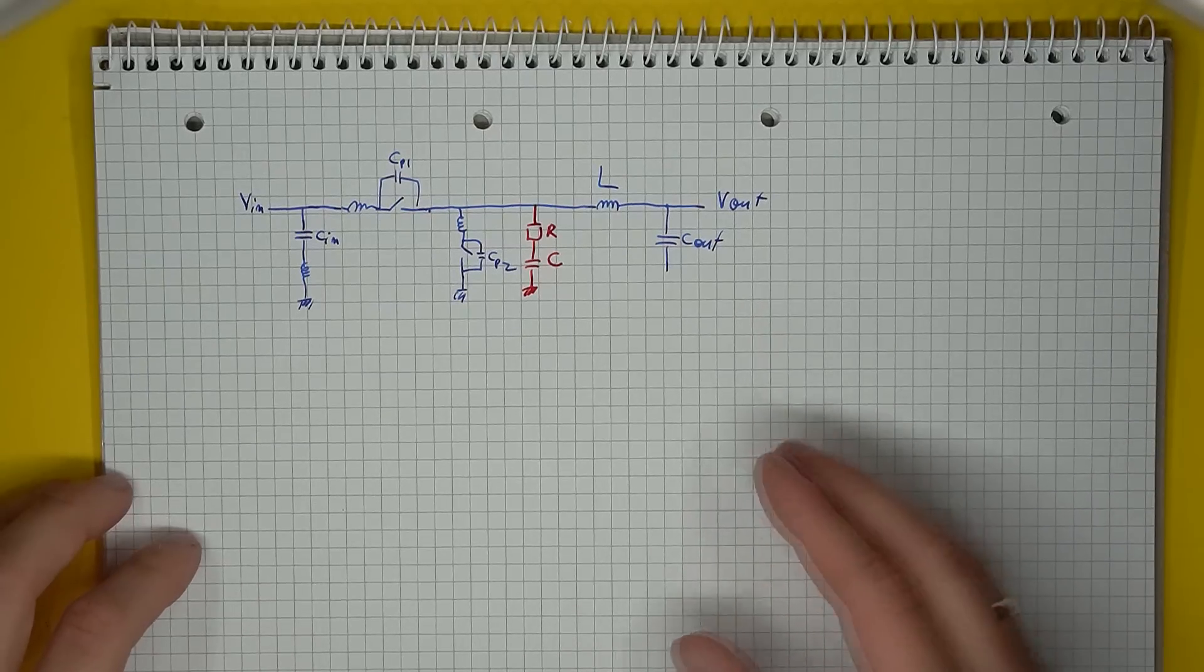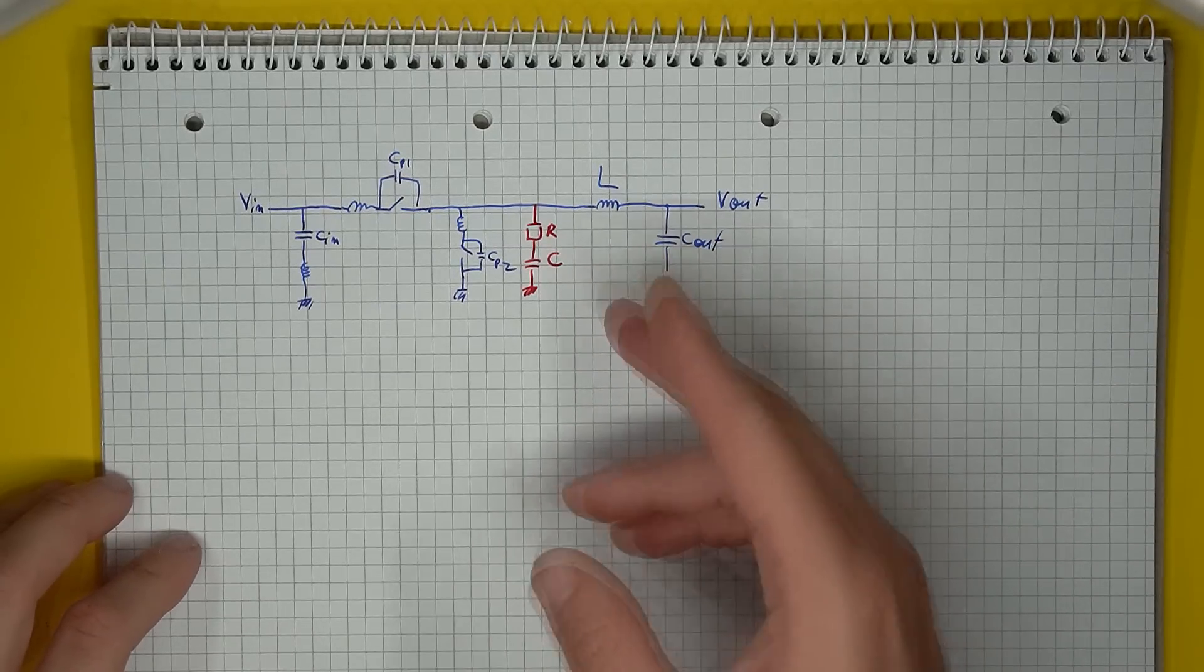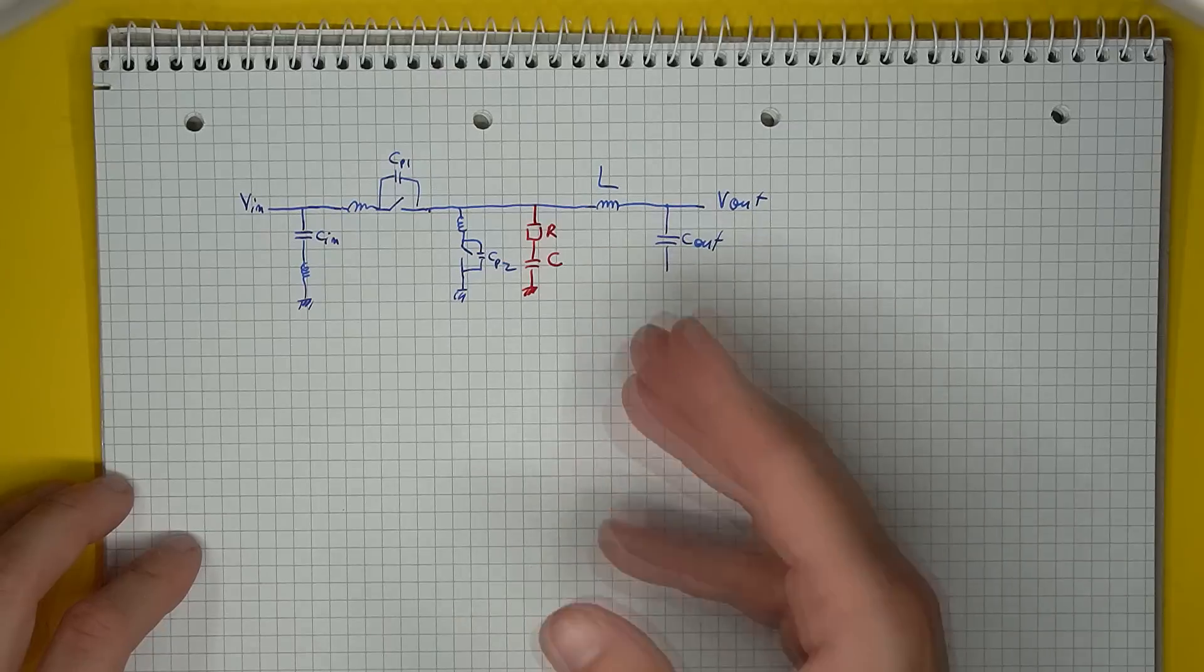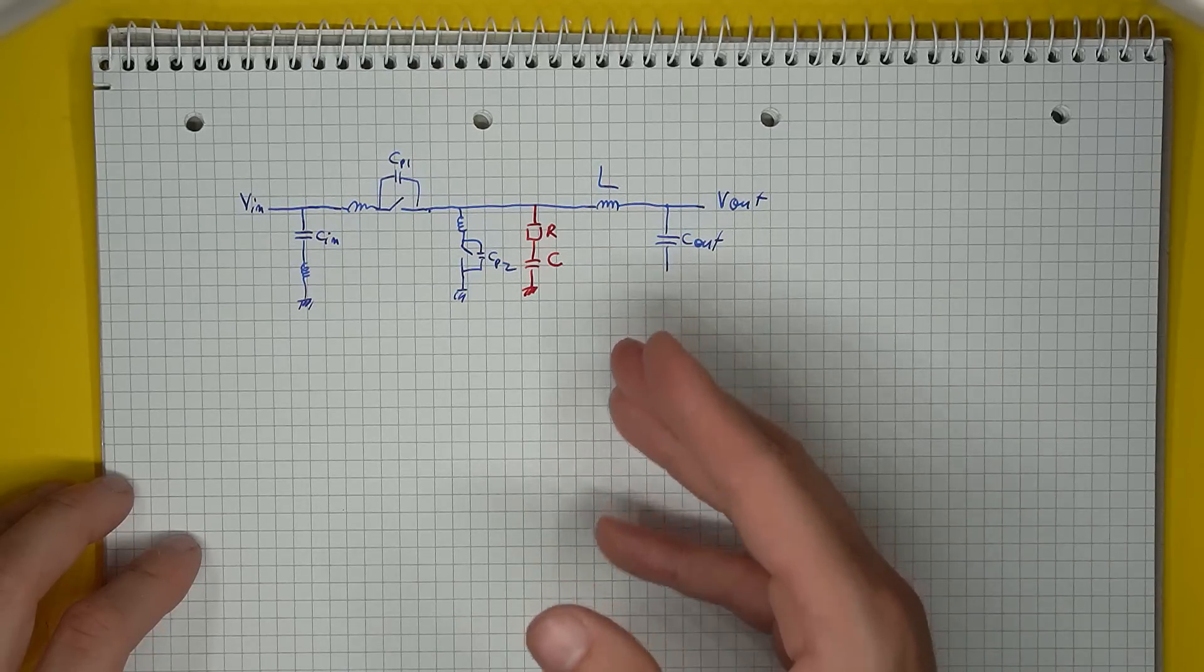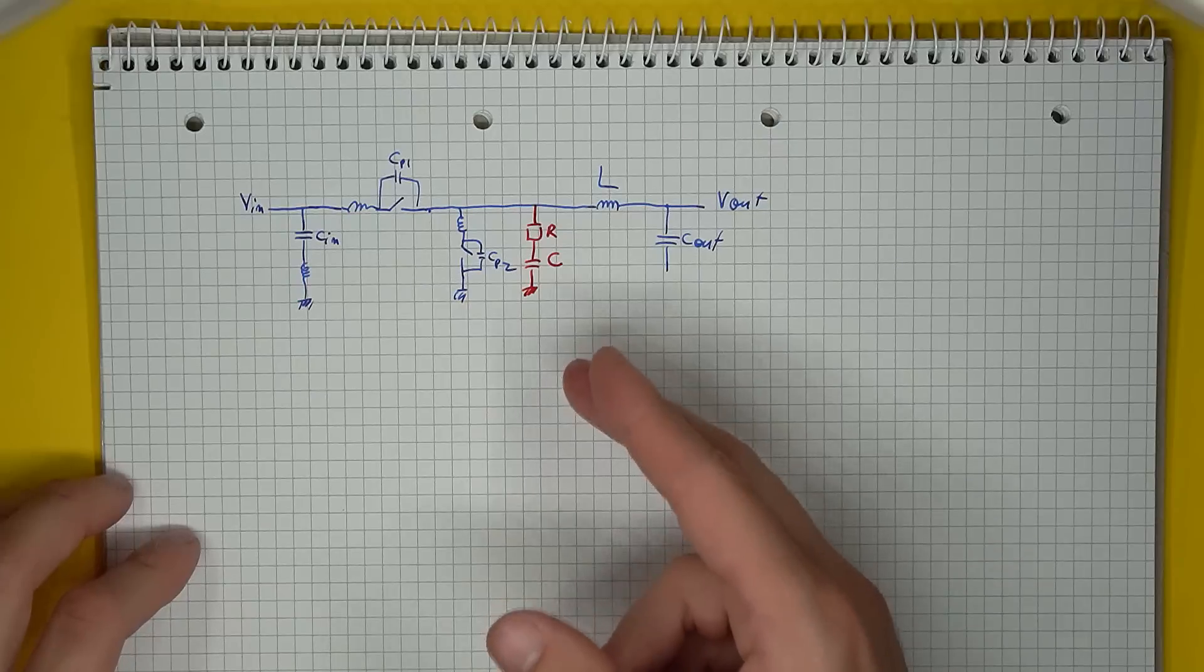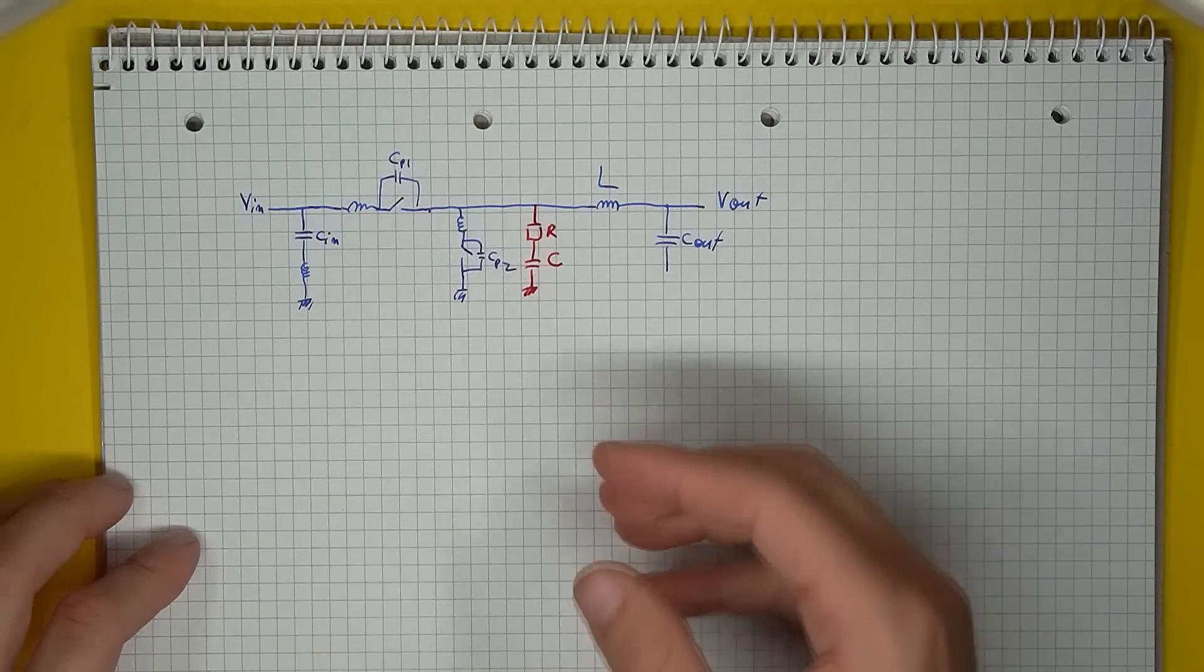So with the buck converter, the snubber is commonly used in parallel with the low side transistor, since the spike it usually attenuates is the oscillation that occurs when the low side is open and the high side is transitioning.